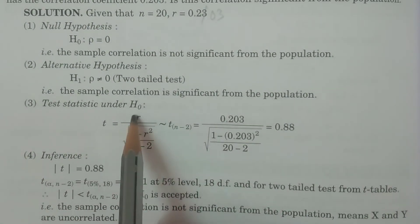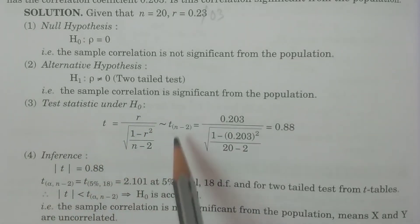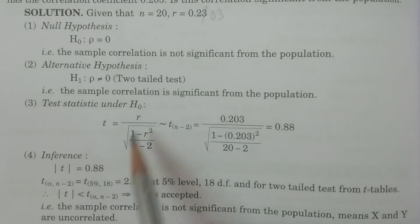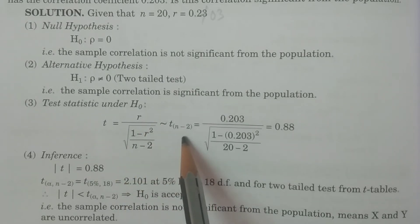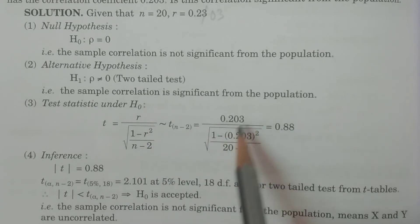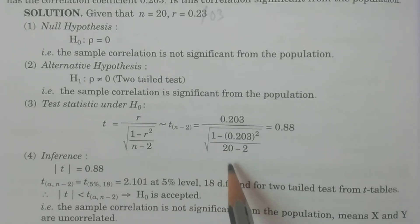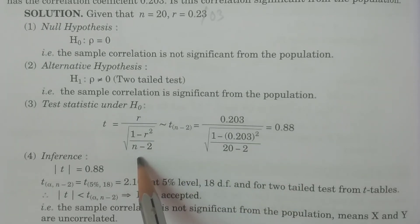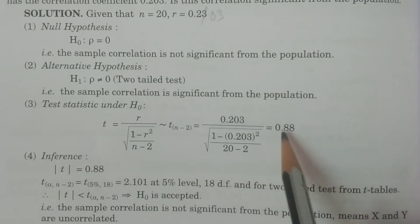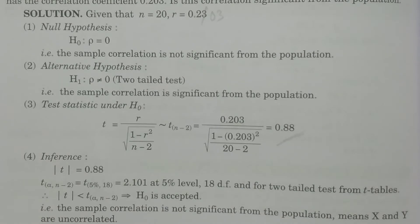Test statistic under H0: t is equal to r divided by square root of (1 minus r squared) divided by (n minus 2), which follows t with (n minus 2) degrees of freedom. Substituting the values: 0.203 divided by square root of (1 minus 0.203 squared) divided by (20 minus 2). The calculated value is approximately 0.88.